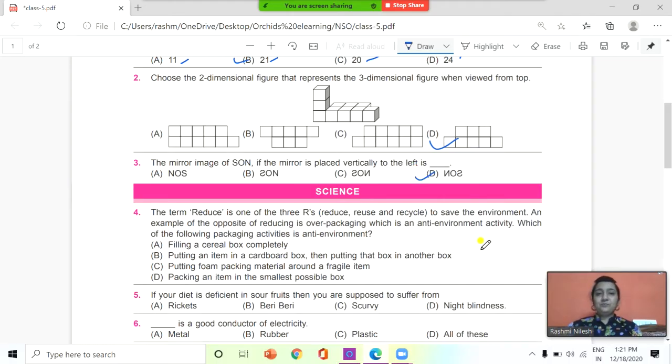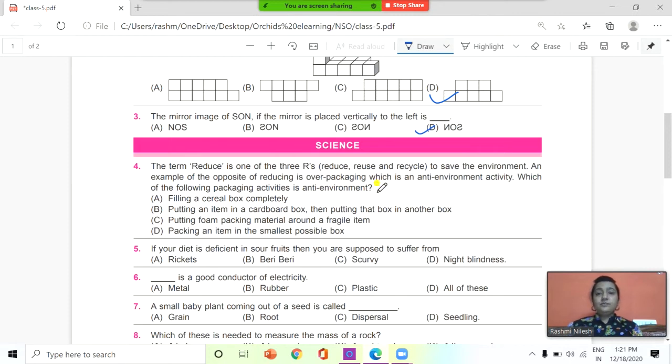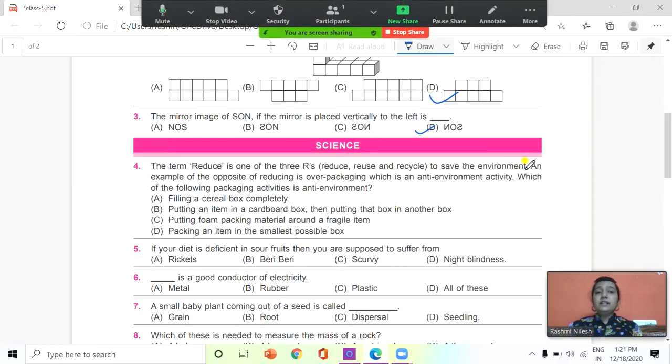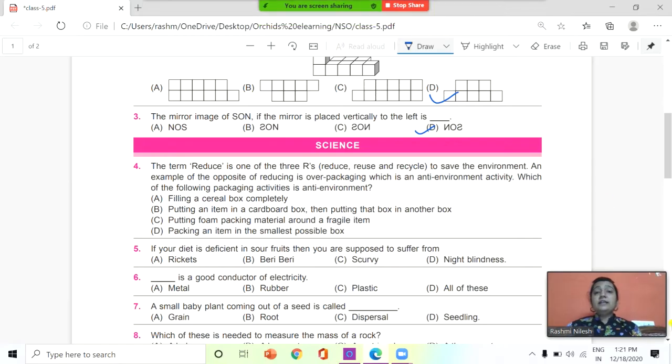Next, coming to fourth question. The term reduce is one of the three R's, that is reduce, reuse, and recycle to save the environment. An example of opposite of reducing is over packaging which is an anti-environment activity. Which of the following packaging activities is anti-environment? First option: filling a cereal box completely. Option B: putting an item in a cardboard box then putting that box in another box. Putting foam packing material around a fragile item. And packing an item in the smallest possible box.